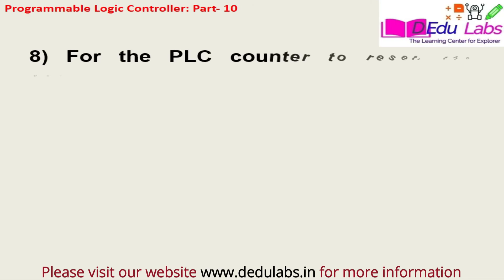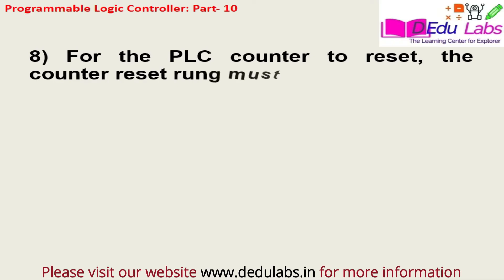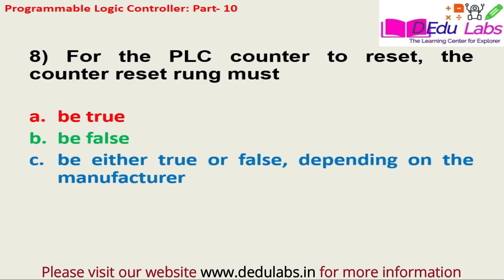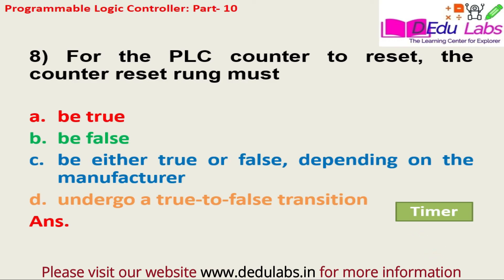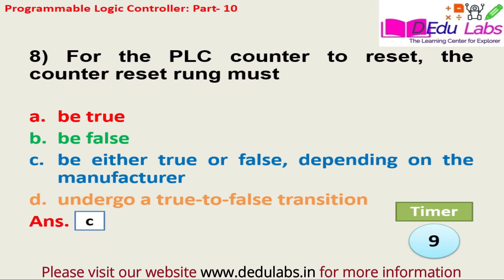Question number eight: For the PLC counter to reset, the counter reset rung must be — option A, be true; option B, be false; option C, be either true or false depending on the manufacturer; option D, undergo a true to false transition. The answer is option C, that is be either true or false, depending on the manufacturer.